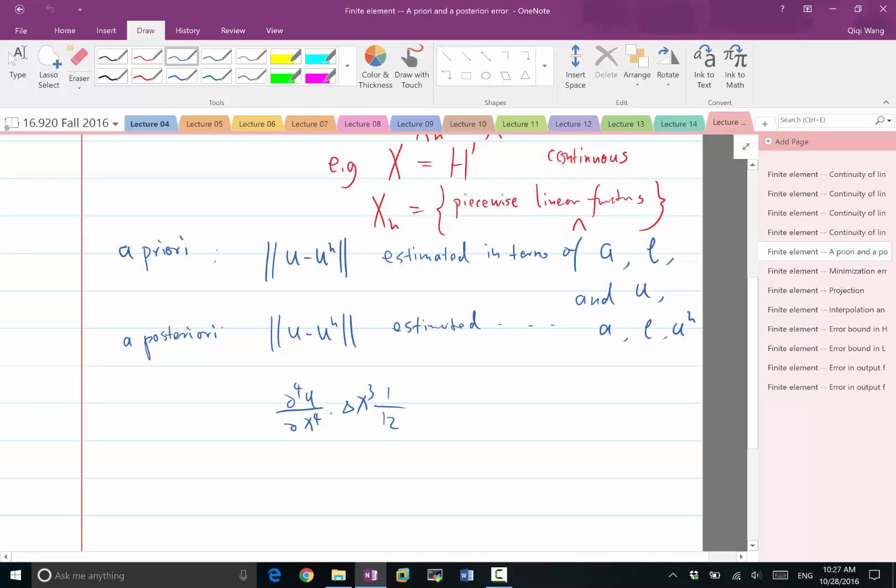So, let's say if the error term is like this, plus O(delta X)^4, then it's a priori. Because of what? Because we actually involve the real solution U in the error estimate.